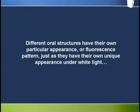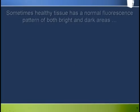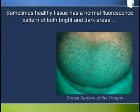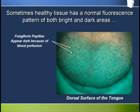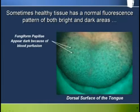We have to remember, with fluorescence visualisation, different oral structures have their own particular appearance or fluorescence pattern just as they have their own unique appearance under white light. Here we see that healthy tissue has a generally homogenous pattern of bright and dark areas. The dark spots are the fungiform papilla that appear dark because of blood perfusion and the lack of much keratin, and the smaller bright spots are the filiform papilla.